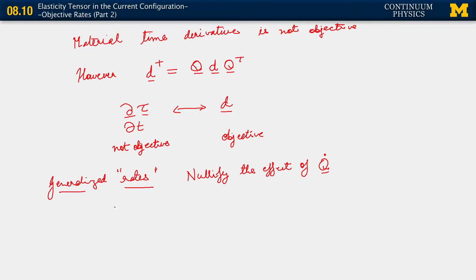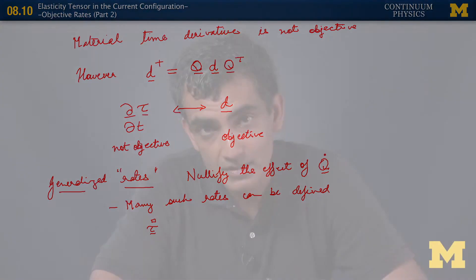Many such rates can be defined. The general form of these relations is the following. We have τ, and we can compute some general rate of it. I'm going to use a special symbol to denote some rate — that's not a dot, it's some rate, not just a traditional material time derivative.